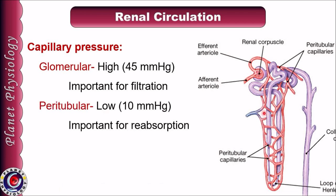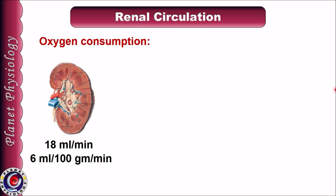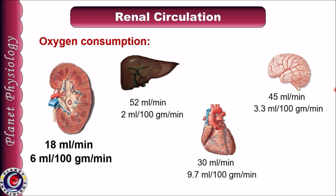In the case of peritubular capillaries, pressure is just 10 mmHg, much lower than systemic capillaries, and this lower pressure favors reabsorption of solutes from renal tubules. Oxygen consumption by the kidney is 18 ml per minute, or 6 ml per 100 g of renal tissue per minute. In comparison, the liver consumes 52 ml per minute, brain 45 ml per minute, and heart 30 ml per minute. Oxygen consumption by the kidney is quite lower than the heart and brain. Per unit mass, the heart consumes maximum oxygen, followed by the kidney, then the brain.